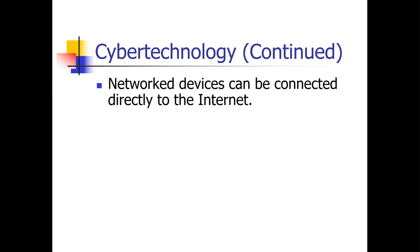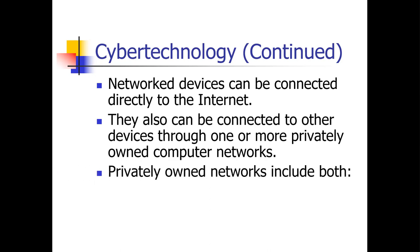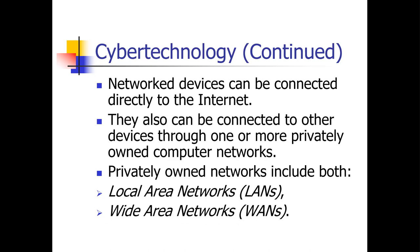Things like network devices can be connected directly to the internet — that's going to be things like internet of things, smart appliances, smart refrigerators, smart toasters, thermostats, door locks, and so forth. As long as they can be connected to other devices through one or more privately owned networks, they're going to be a cyber technology. Privately owned networks include things like a LAN, WAN, and so forth. Essentially, any network will allow communication. So if the device connects to a network, it will communicate — it's cyber technology.